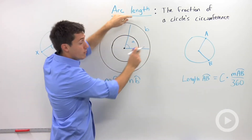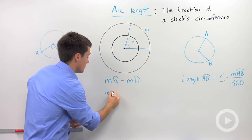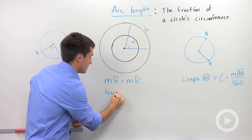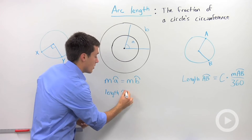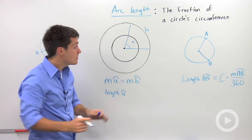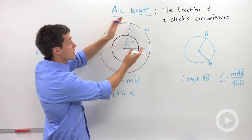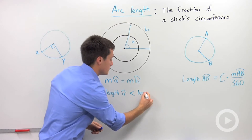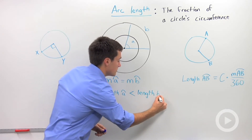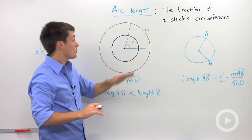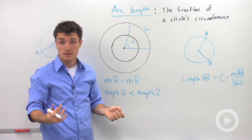But if we look at the distance between the intercepted arc's endpoints, we can see pretty clearly that the length of arc A is definitely smaller than the length of B. So it is possible for two arcs to have the same measure but different lengths.